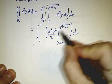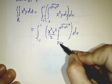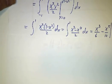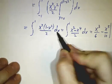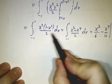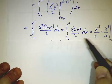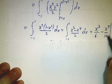When y is root 1 minus x squared, y squared is 1 minus x squared. When y equals 0, y squared is 0. So this gives us x squared times 1 minus x squared over 2, and then integrating that from negative 1 to 1 is easy. We multiply it out, get x squared minus x to the fourth over 2. The integral of that is x cubed over 6 minus x to the fifth over 10.